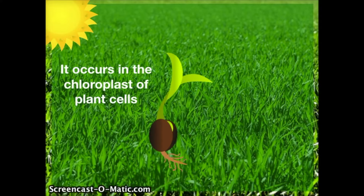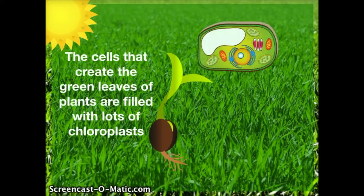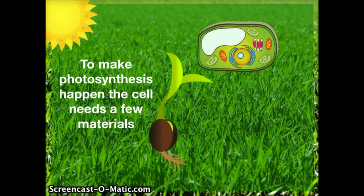It occurs in the chloroplasts of plant cells. The cells that create the green leaves of plants are filled with lots of chloroplasts. To make photosynthesis happen, the cell needs a few materials.